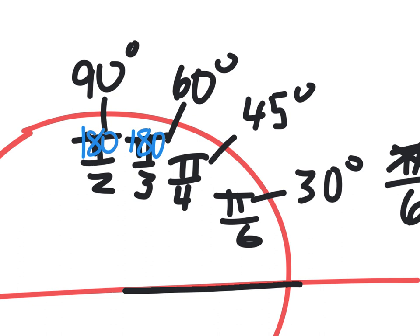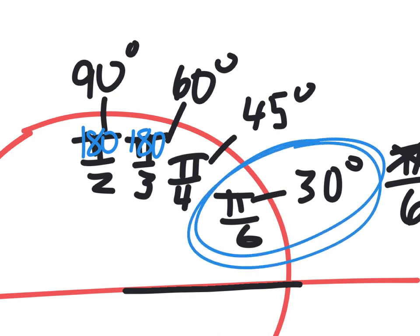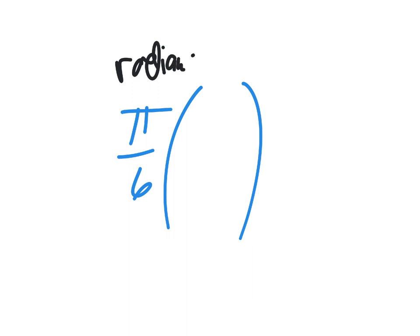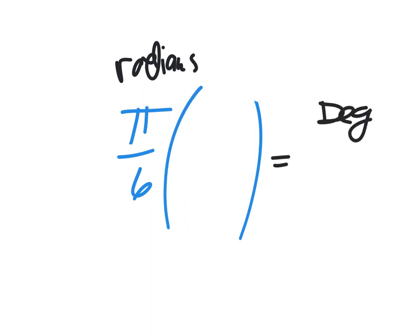So how do you do conversions between radians and degrees? Well, if you had pi over 6 — everybody write down pi over 6, please — you would need to multiply by a factor to change it from radians into degrees. This is radians. What I'm going to get at the end is degrees.